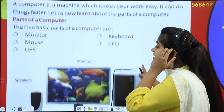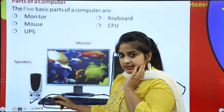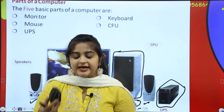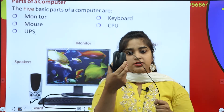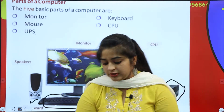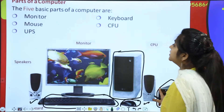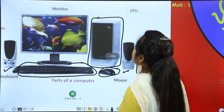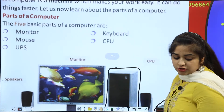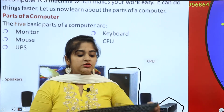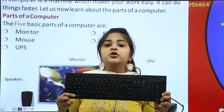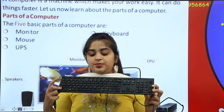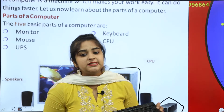The five parts are: Monitor, which is the main screen; Mouse, which we use to drag and point — like I am showing you this mouse; UPS, the small box; then your Keyboard, which has many keys — it is a board of keys, so it is called keyboard.